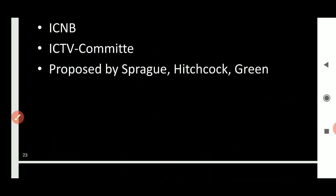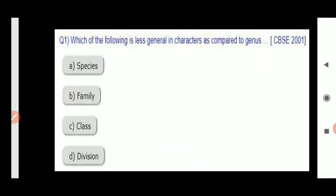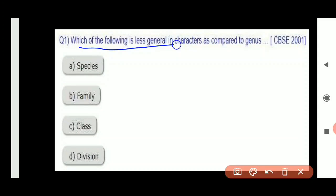Let's move on to questions related to this chapter. The first question is: which of the following is less general in character as compared to genus? I have told you the order of taxa. In taxonomy, every organism is classified into certain categories.